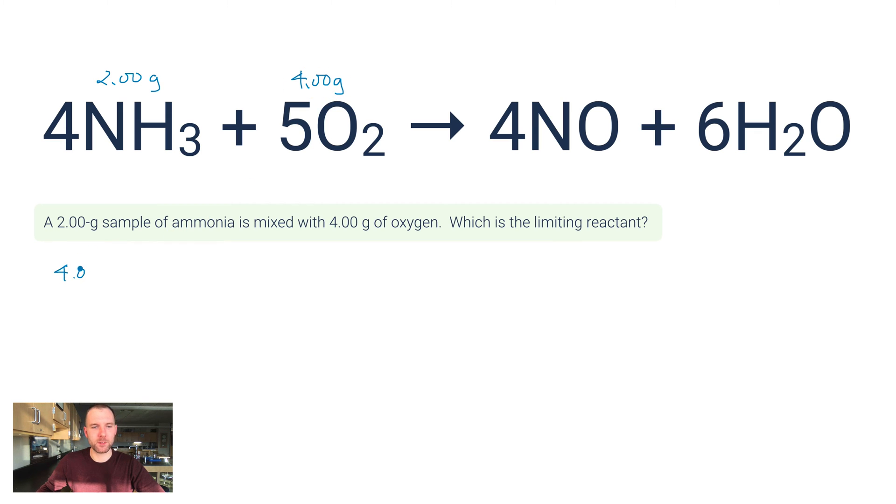If I have 4 grams of O2, I want to do a mass-to-mass stoichiometry calculation to figure out what mass of NH3 would react completely with this 4 grams of O2. On the bottom, I want the molar mass for oxygen. That's 16 for each oxygen times 2, which is 32 grams of O2. That's the mass of one mole of O2.